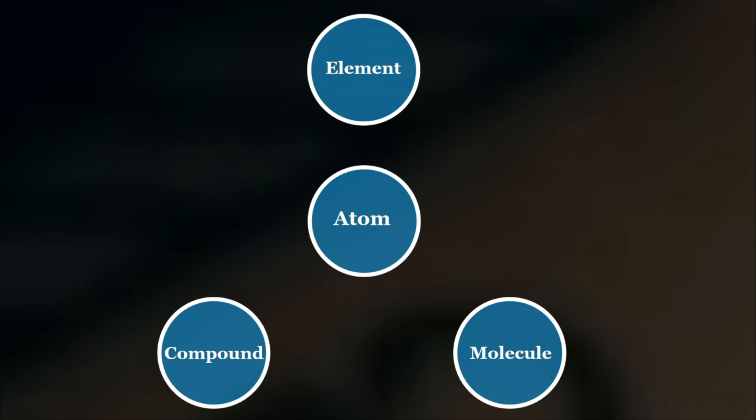Shown here are the four terms that are associated with electron theory: element, atom, compound, and molecule. Now, what is an element?